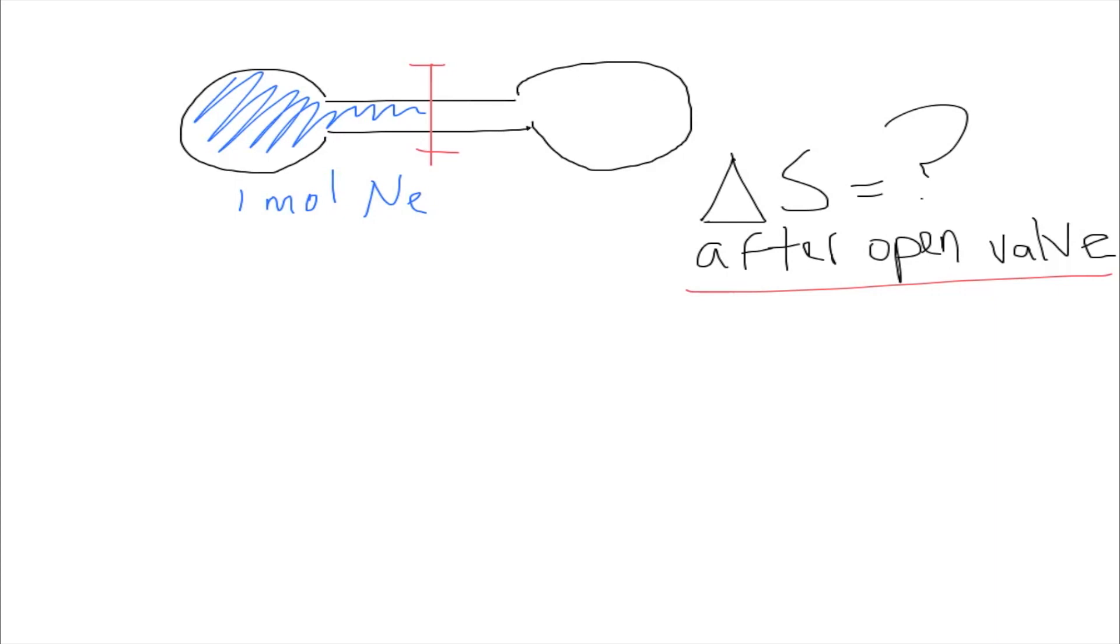Now the question for this is how would that affect the entropy if the valve is open, so that the gas can disperse all around the object. So note that it's asking for the change in entropy, not the final entropy. So that would be delta S would be S final minus S initial.